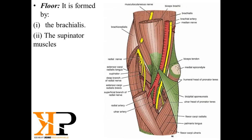Next is the floor. The floor of the cubital fossa is made by two structures: first is the brachialis muscle and second is the supinator muscle. Here you can see the brachialis muscle — this whole muscle is the brachialis muscle — and this one is the supinator muscle.